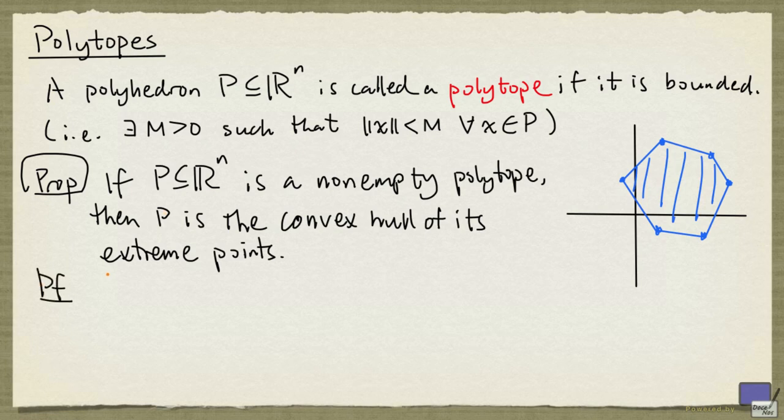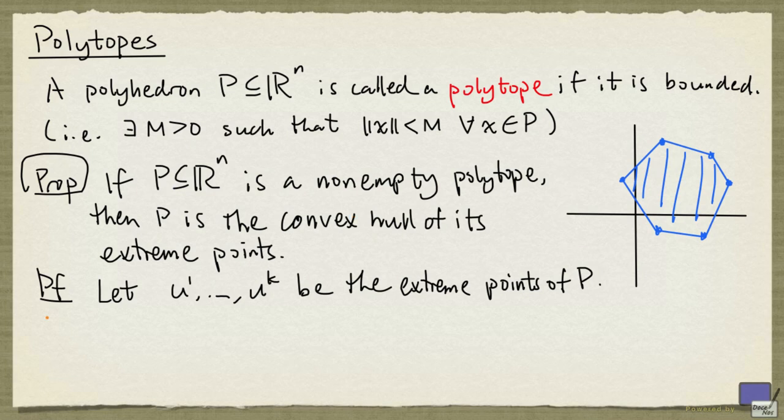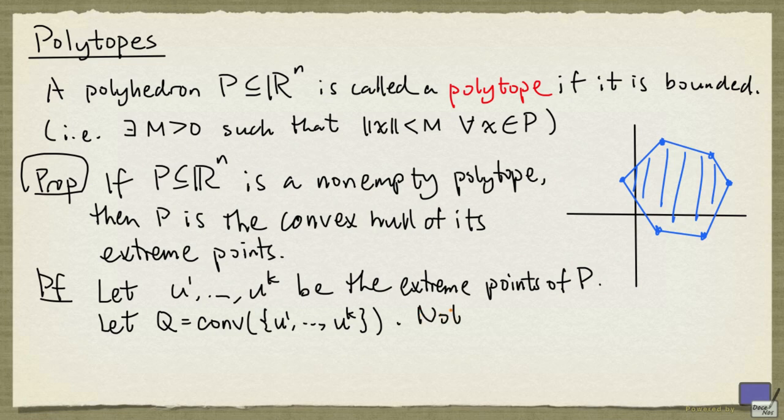In the previous video, we saw how a polyhedron can only have finitely many extreme points. So we can list the extreme points of P as u1 up to uk. And we are going to let Q be the convex hull of u1 up to uk. Since P is convex, P must contain Q.